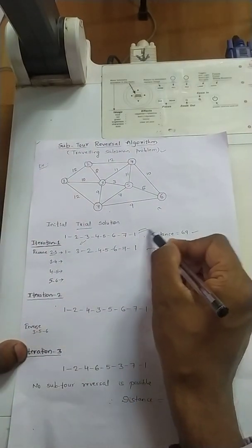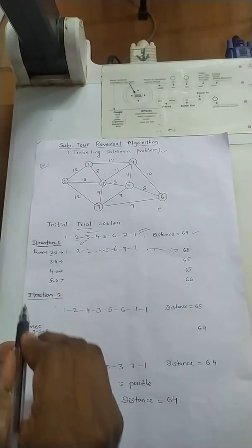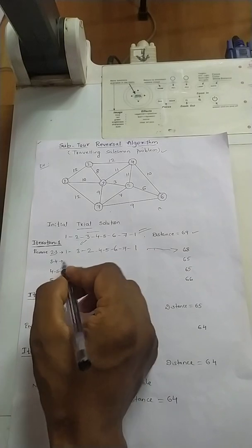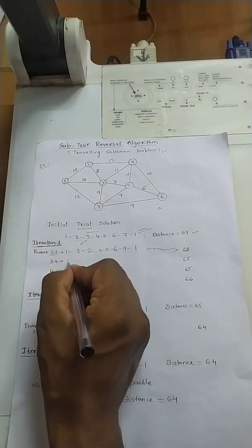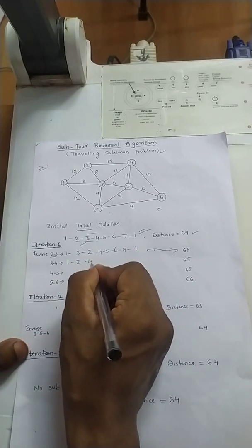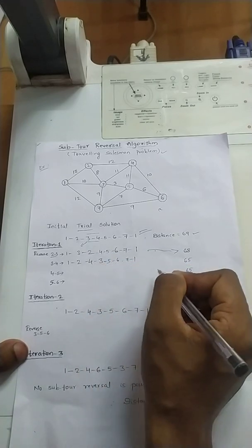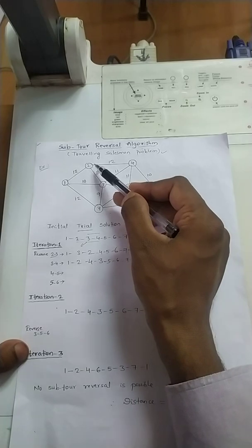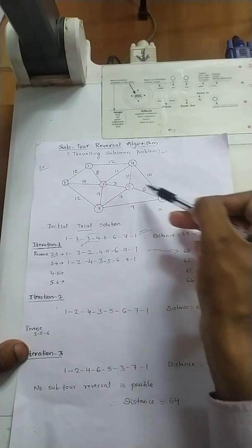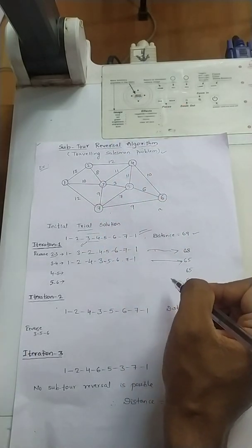Again in the initial trial solution, instead of reversing 2 and 3, I will try reversing 3 and 4. So it becomes 1, 2, 4, 3, 5, 6, 7, 1. Path 1 to 2 exists, 2 to 4 exists, 4 to 3 exists, 3 to 5 exists, and so on. The distance for this path is 65.